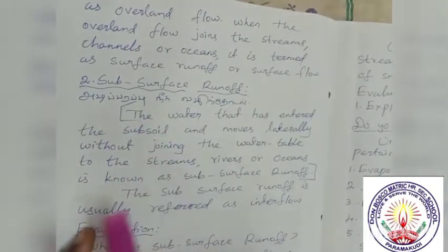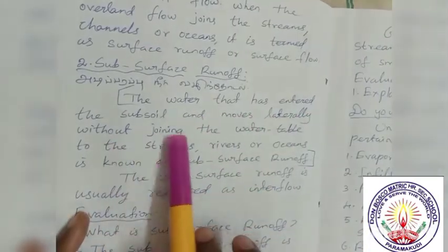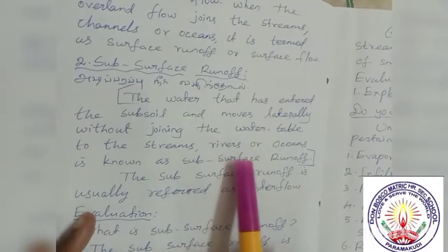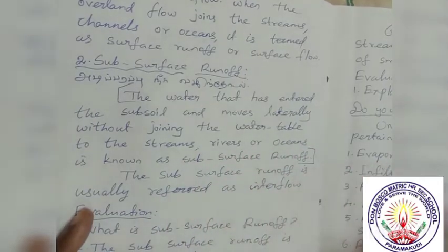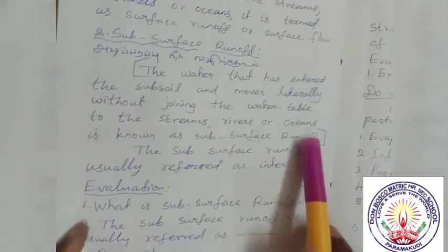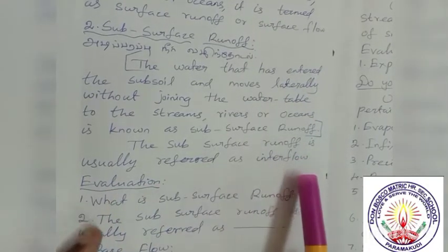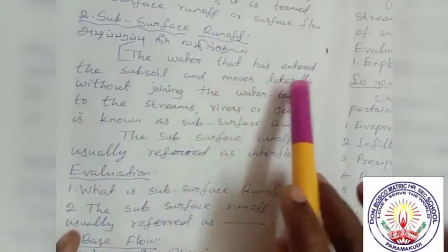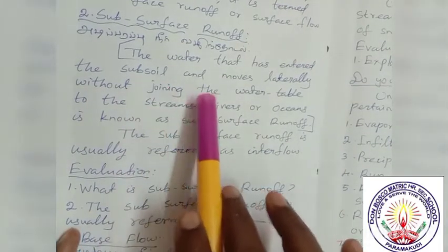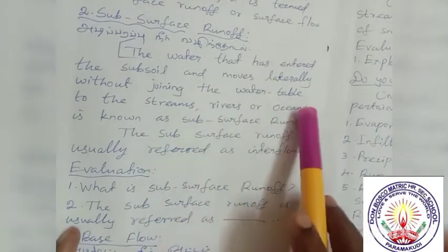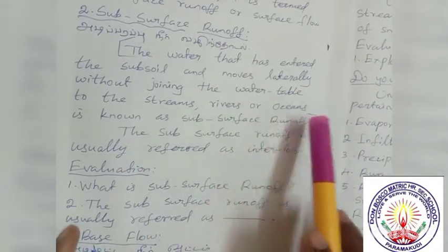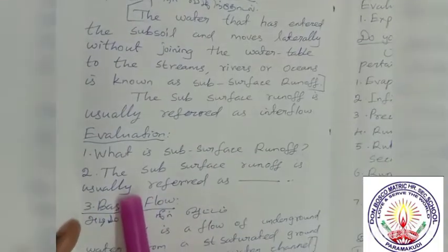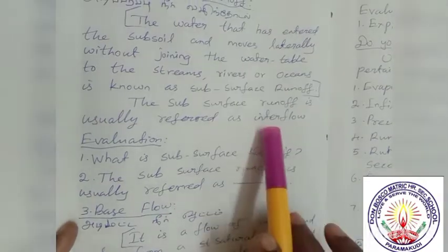The water that has entered the sub-soil and moves laterally without joining the water table, flowing to streams, rivers or oceans, is known as sub-surface runoff. The sub-surface runoff is usually referred to as interflow.